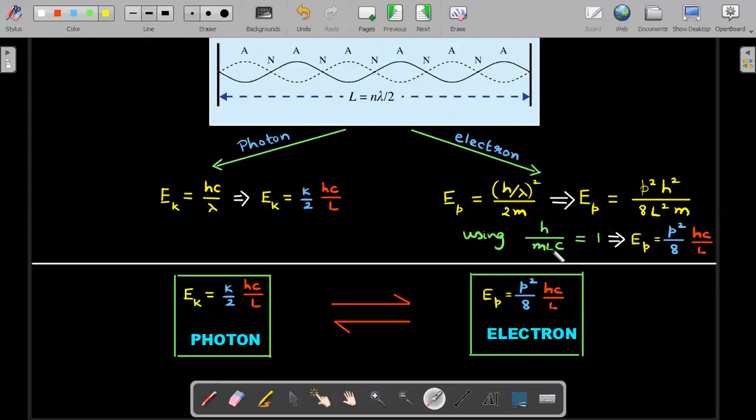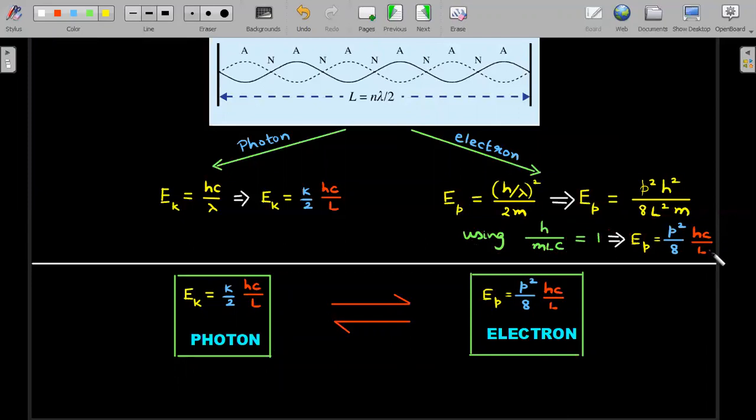Once you rearrange and substitute lambda equal to 2L by p, where p is the harmonic number, you would have p squared divided by 8, and then use the value of h by m times L times c that he mentioned in the question as 1.